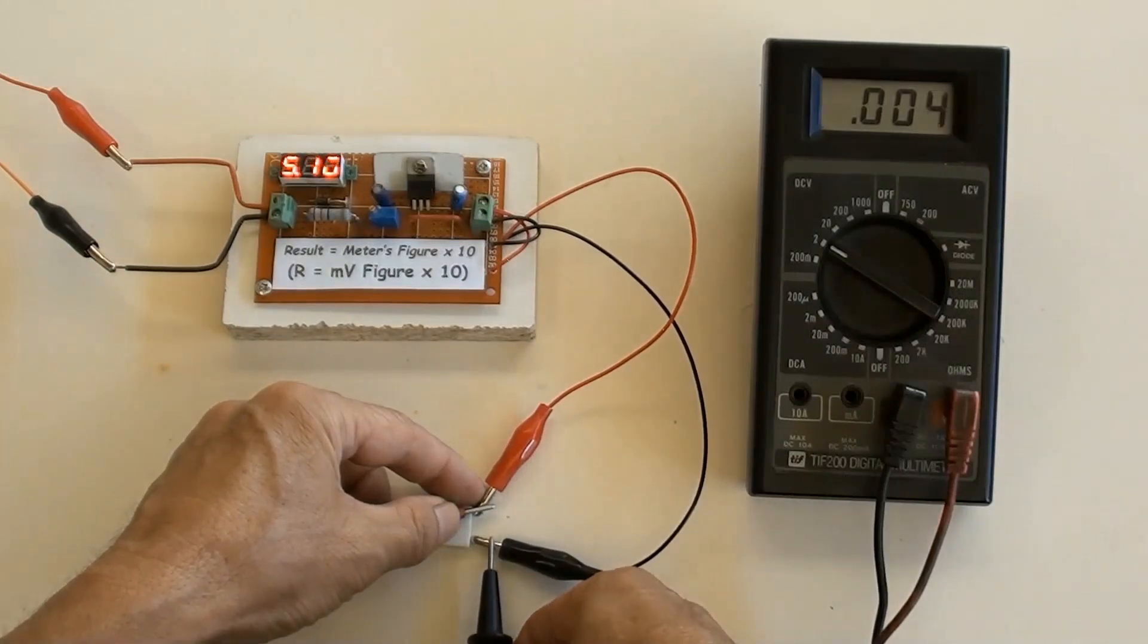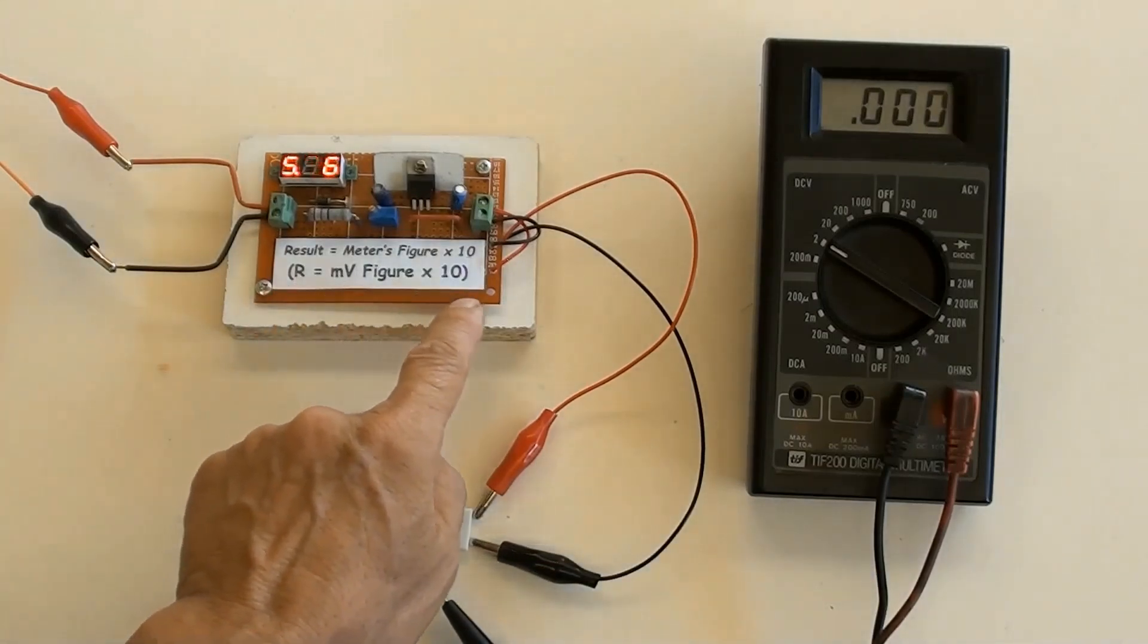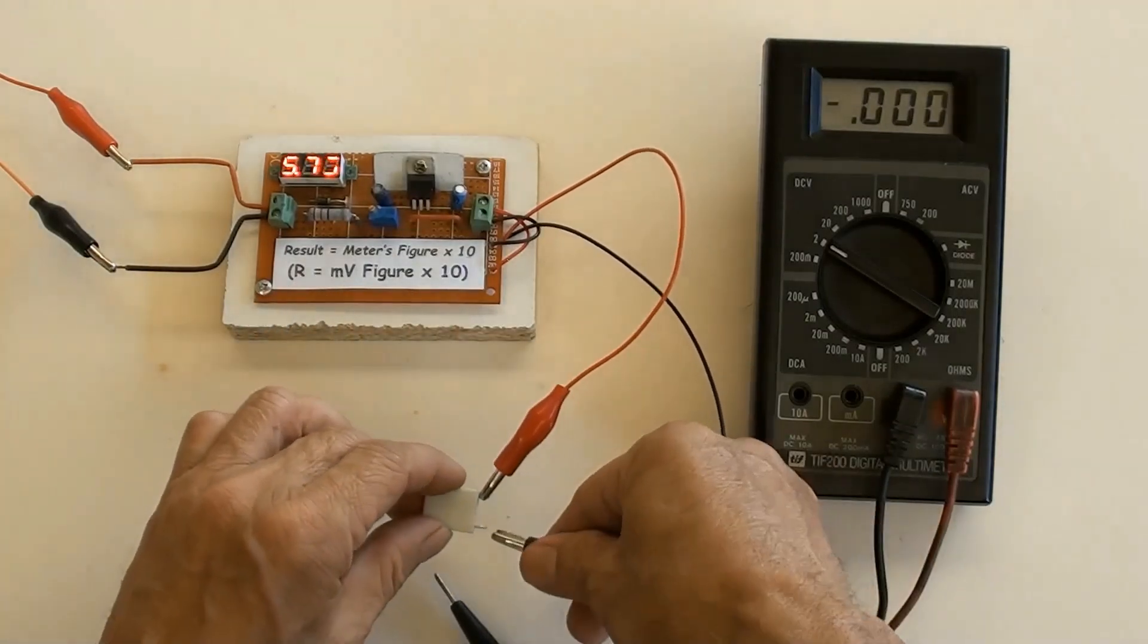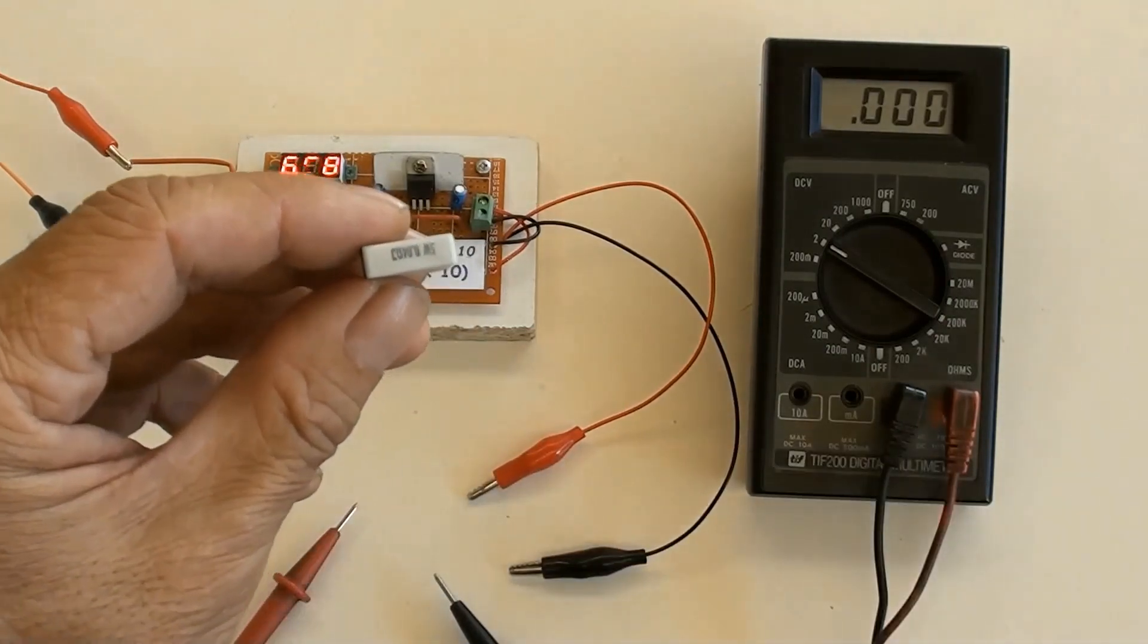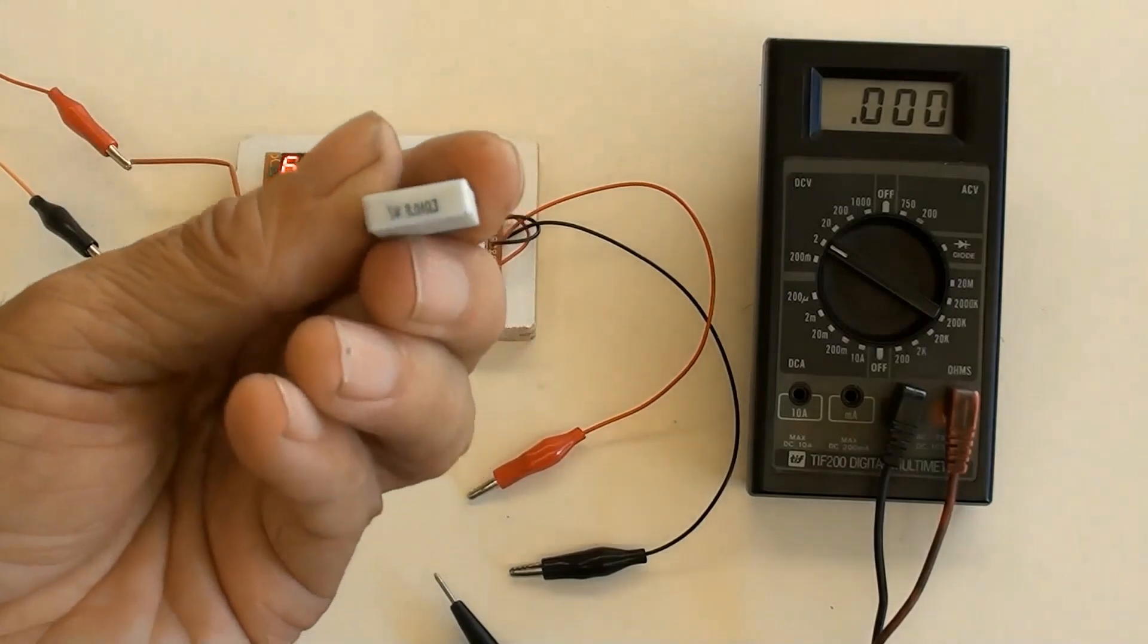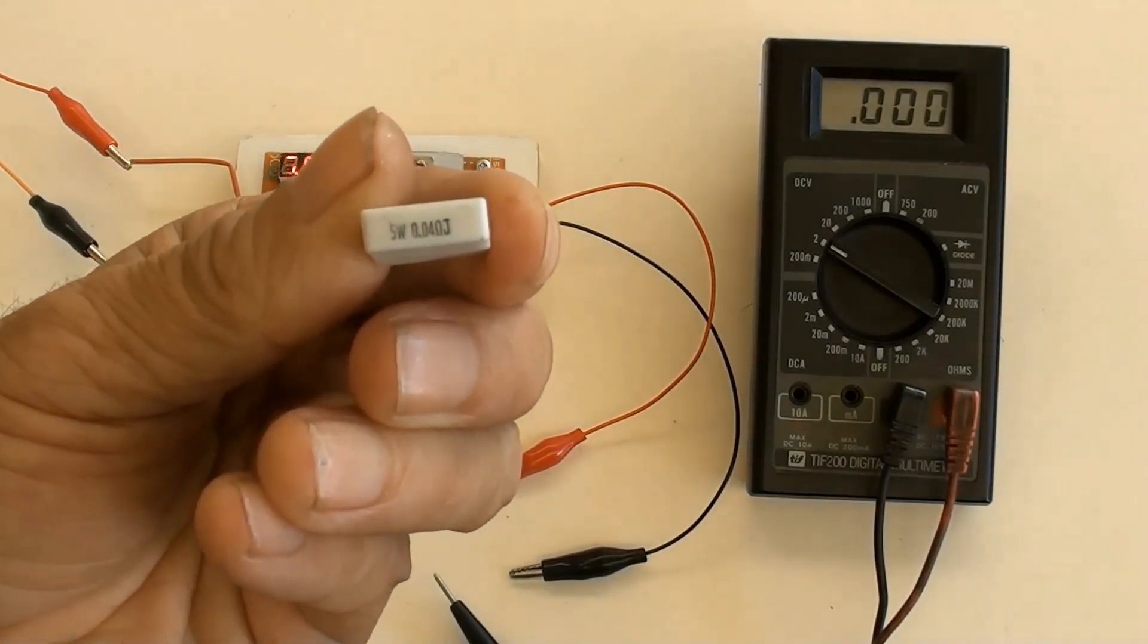Measuring another one. Multimeter indicated 0.004 volts. Then using formula on the sticker, 10 times equals 0.04 ohms, or in other words, 40 milliohms. Yes, it is 5 watt, 40 milliohms, printed here.